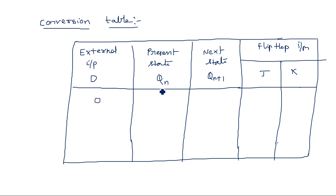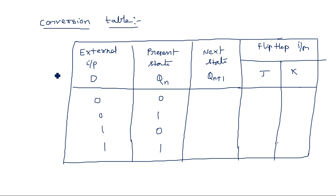Take external input and present state combinations: 0,0 / 0,1 / 1,0 / 1,1. The next state QN+1 is derived from the truth table of the D flip-flop. We need two tables to derive this conversion table: the truth table of the D flip-flop and the excitation table of the JK flip-flop. Without these two you cannot draw the conversion table.